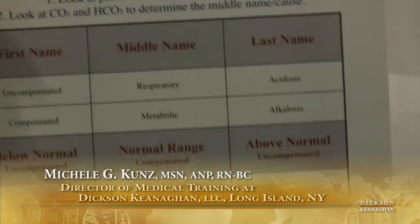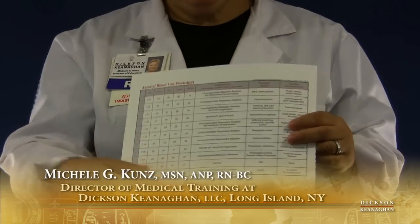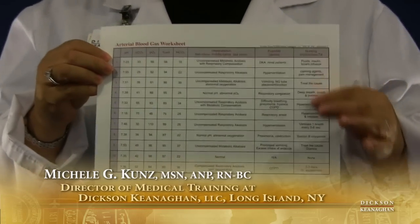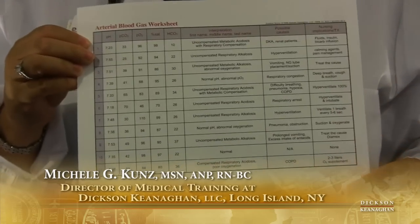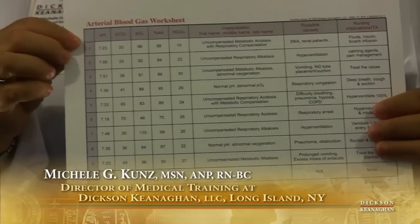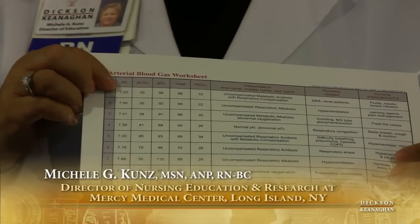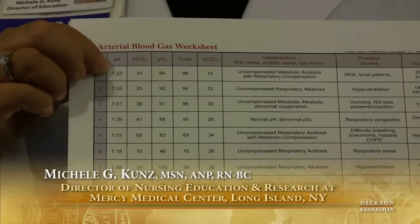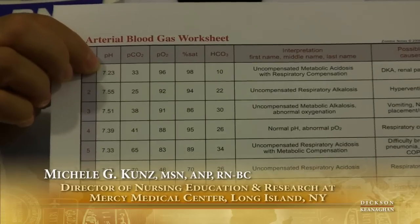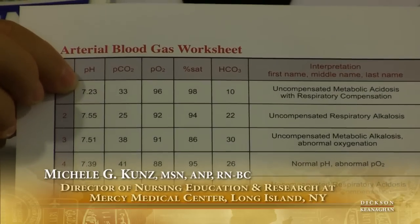On the back of the zombie notes, we have a couple of examples with the answers already there, so that could be helpful as well. If I look at my first example and take a pH of 7.23, I have to give it a first name, a middle name, and a last name.